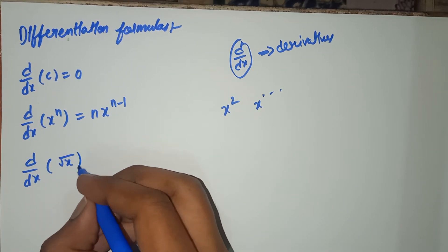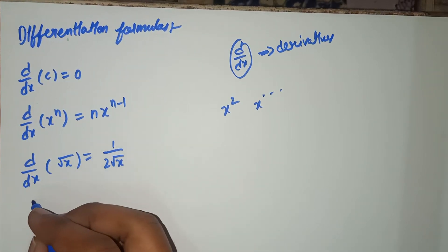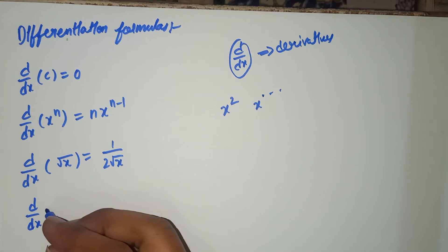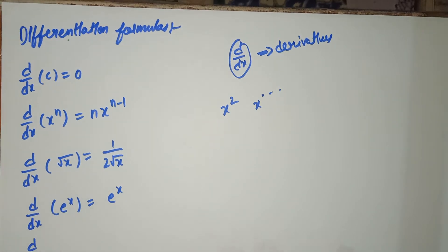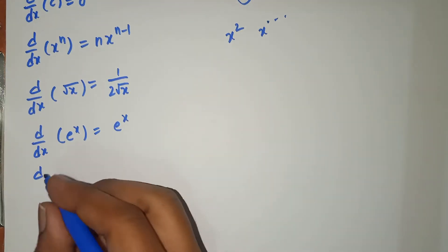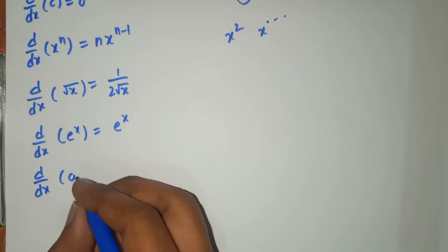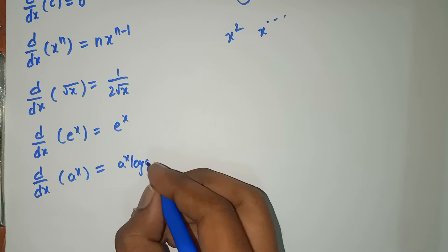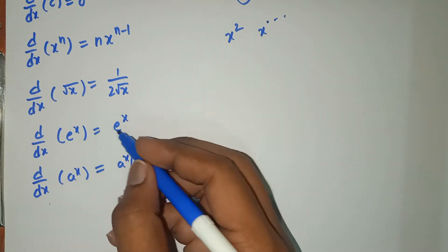d by dx of root x equals 1 by 2 root x. d by dx of e power x equals e power x. d by dx of a power x equals a power x log a.